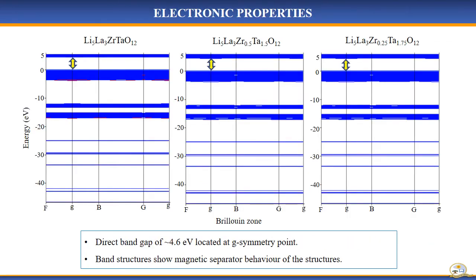Further calculations on the band structure were performed to evaluate the electronic stability of the structures. From the results, it shows that the band structures have a direct band gap of approximately 4.6 electron volts along the gamma symmetry point. The large band gap indicates that the materials have wide bandgap insulator behavior.